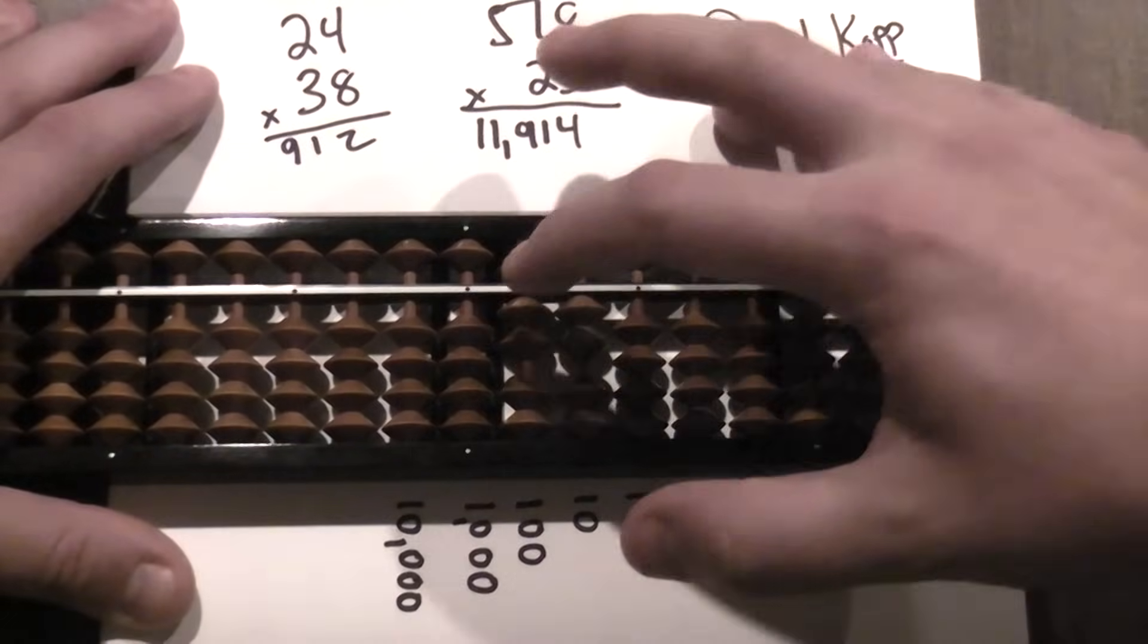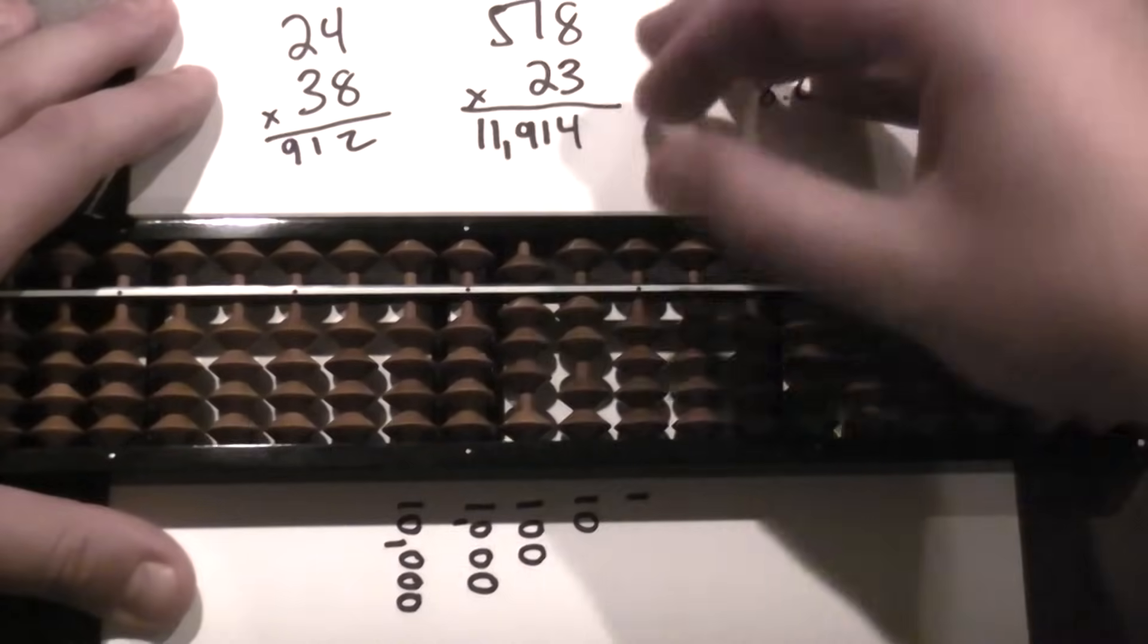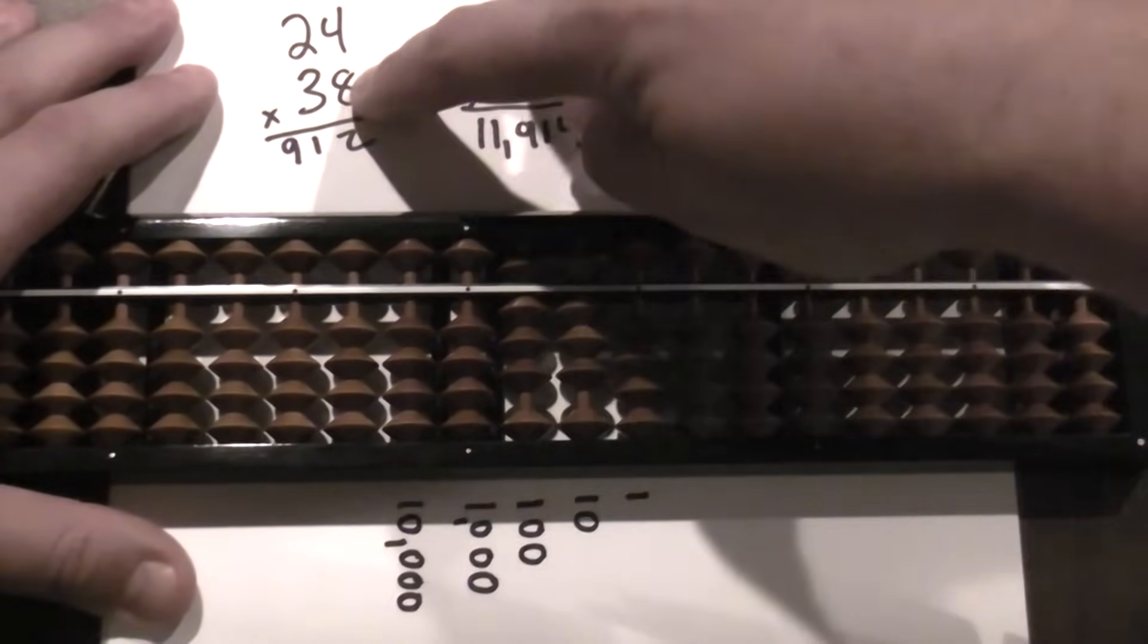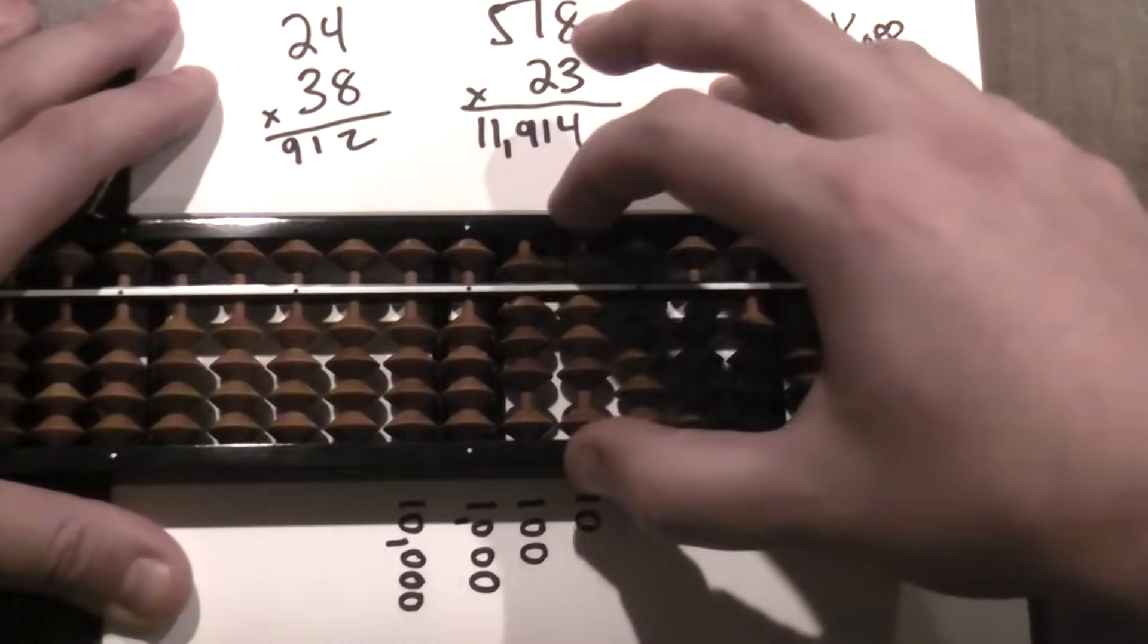So one, two, three. Eight times two is sixteen. So one, six. Eight times four is thirty-two. So I need to add thirty-two here.